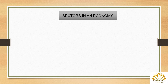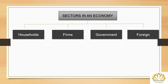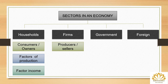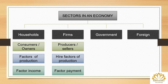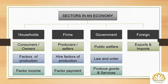There are four sectors in an economy: the household sector, firms, government sector, and the foreign sector. The household sector are the consumers or owners — they purchase products or services manufactured by firms and supply factors of production in return for factor income. Firms are the producers or sellers — they produce and sell goods and services and hire factors of production making factor payments. The government sector works for the welfare of society, maintains law and order, and produces goods and services under the public sector. The foreign sector involves exports and imports, creating a flow of capital between countries.